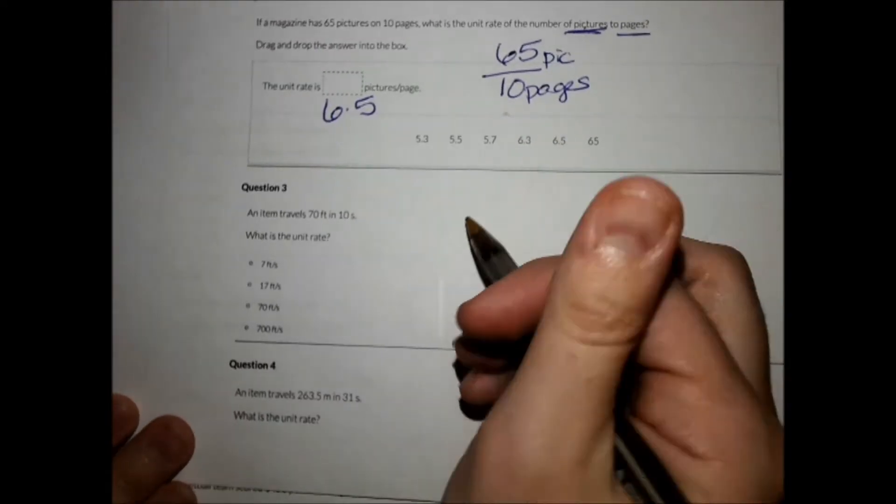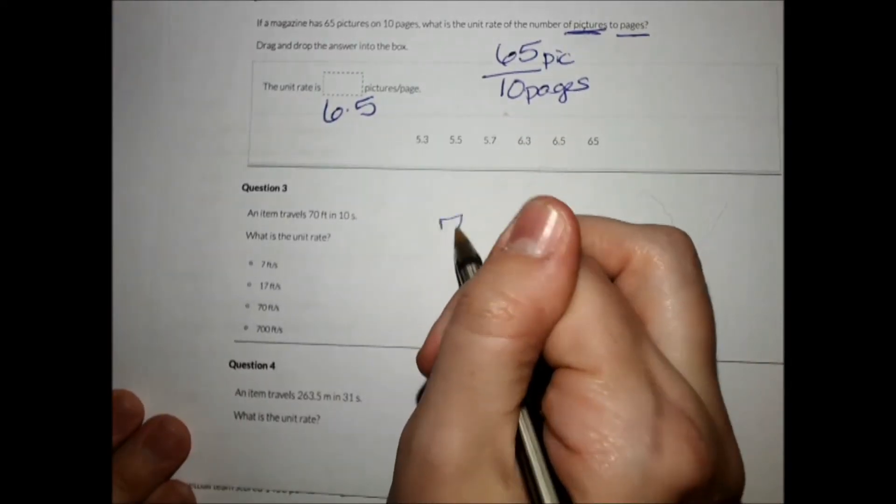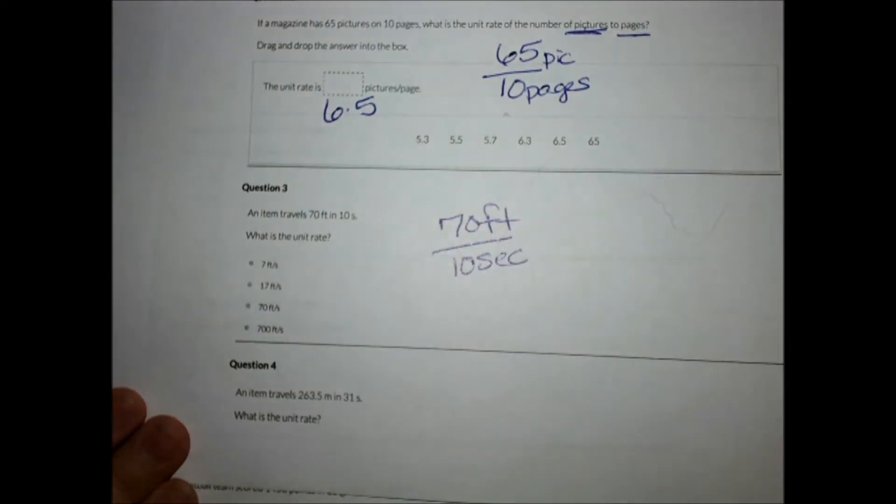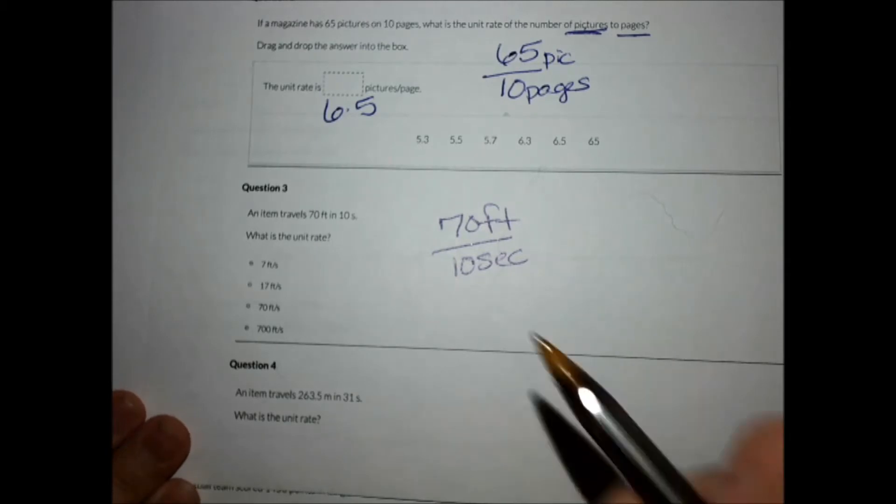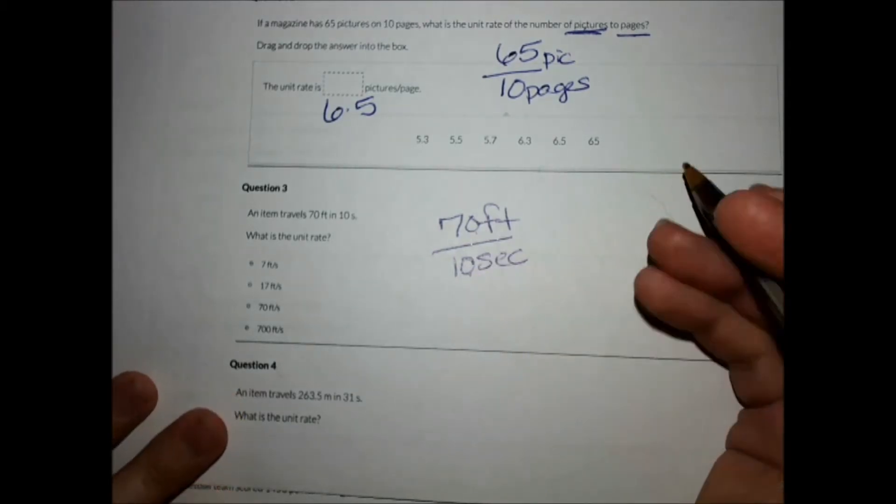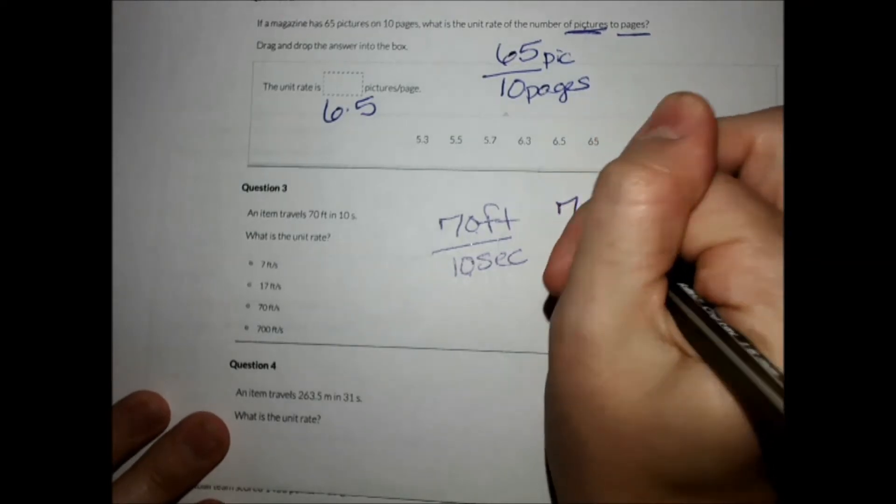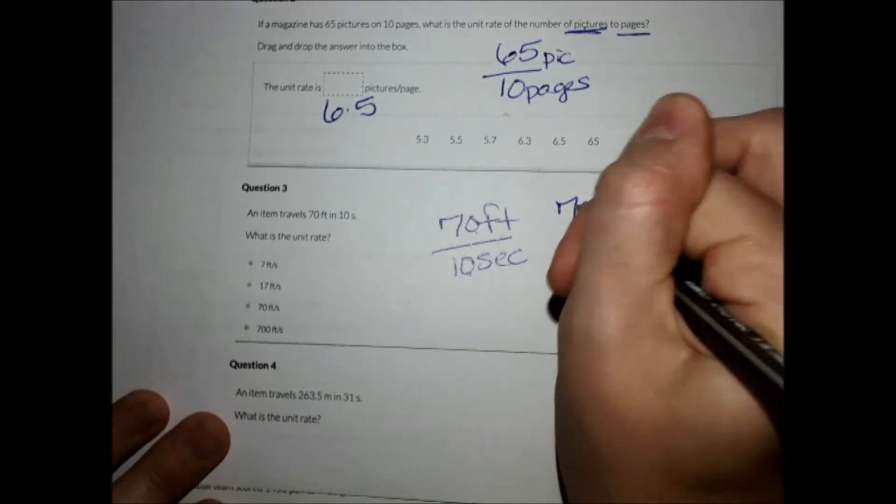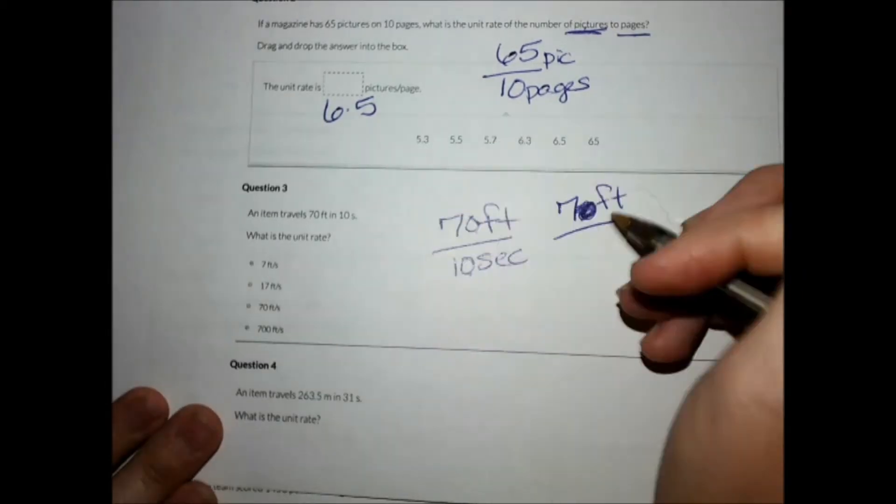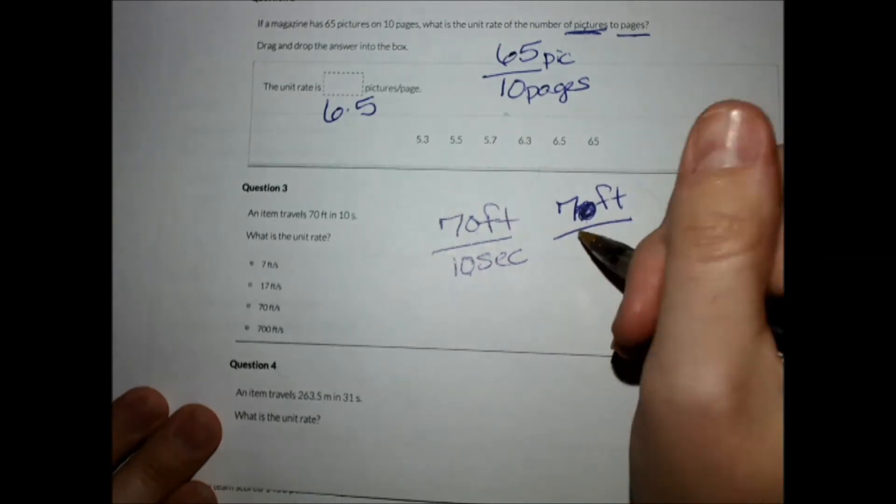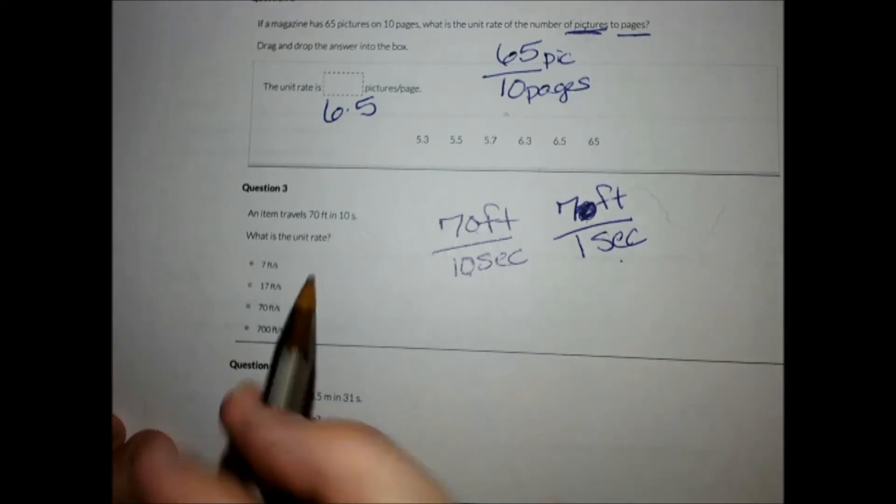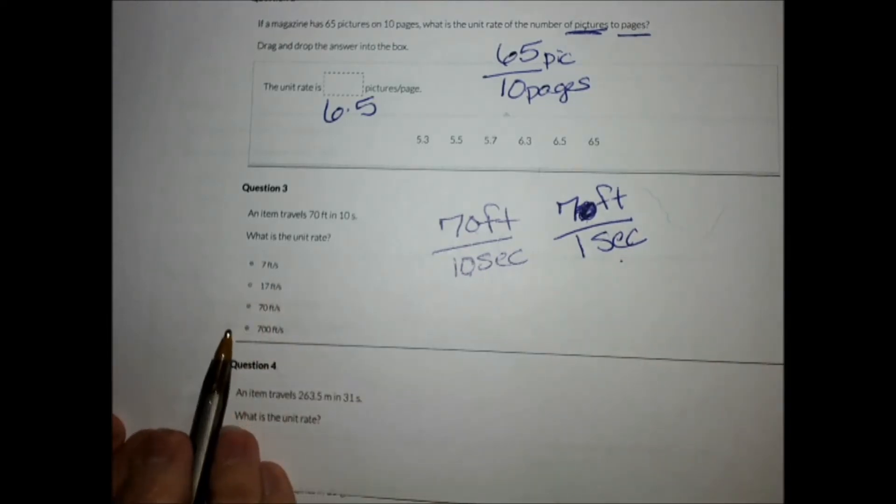Number three. An item travels 70 feet in 10 seconds. So it wants feet per second and we've got feet on top. Now this is a very simple division, 70 divided by 10. If we simplify both of those by 10, 70 divided by 10 gives me 7, 10 divided by 10 gives me 1. So that was a simple one to simplify to the unit rate of 7 feet per second.